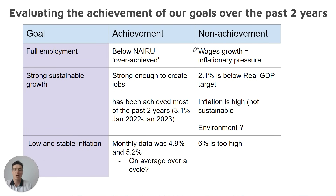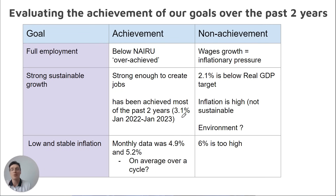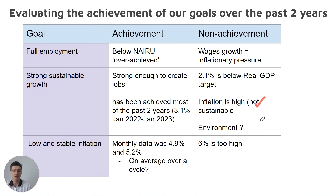For full employment, we've overachieved it because the unemployment rate is low — this is good because unemployment is low. However, a low unemployment rate creates wages growth, and that puts upward pressure on inflation, which is bad for the goal. For strong and sustainable growth, on the one hand it's strong enough to create jobs. Last year the rate was 3.1%, so that could be your argument for achievement. The non-achievement is it's currently 2.1%, below the 3.3% to 3.5% real GDP target, inflation is high so it's not sustainable, and the environment is being destroyed.